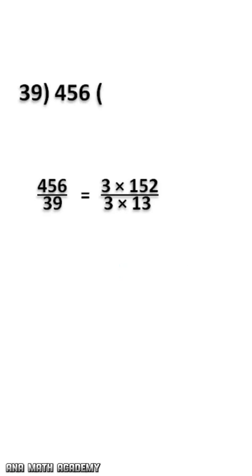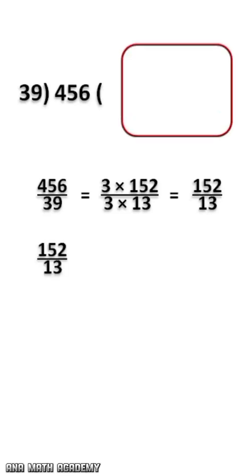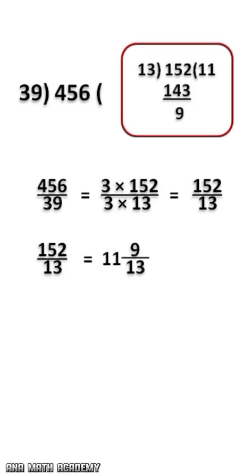Now, if we cancel out the common factor 3, we are left with 152 divided by 13. If we divide 152 by 13, we get quotient 11 and remainder 9.